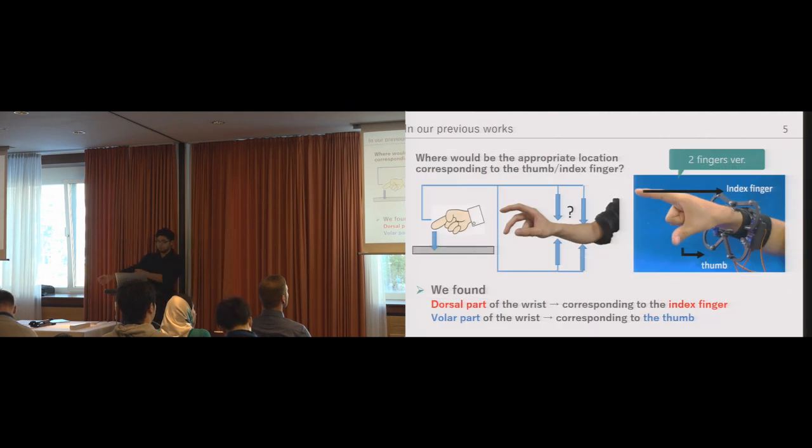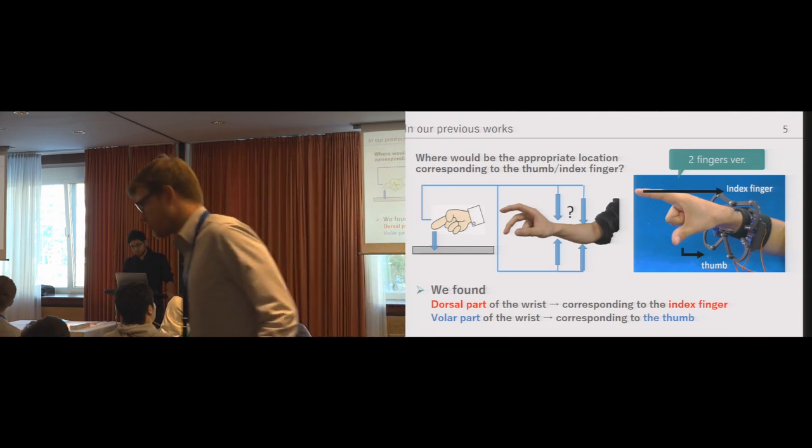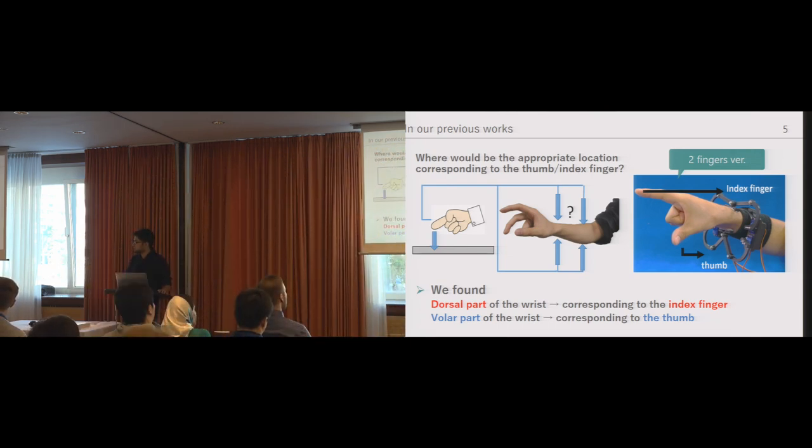In our previous report, we found that the dorsal part of the wrist was an appropriate location corresponding to the index finger and the forearm side part of the wrist was an appropriate location for the thumb. Also, we conducted a preliminary user study in virtual reality confirming that our device gives more natural sensation than vibrations.